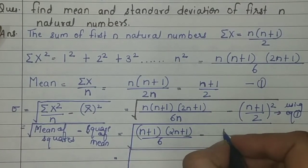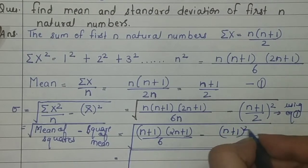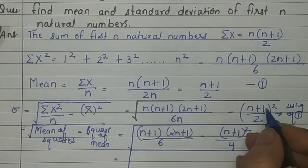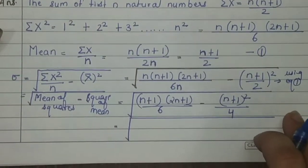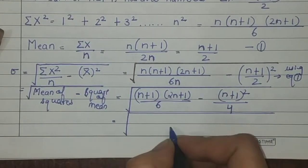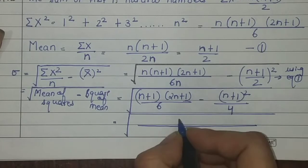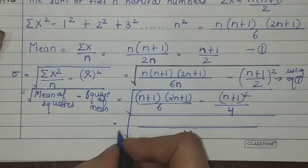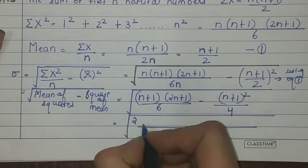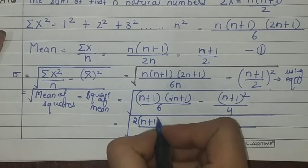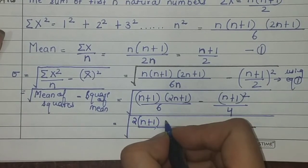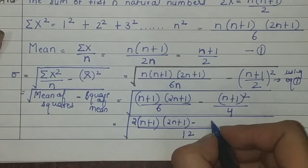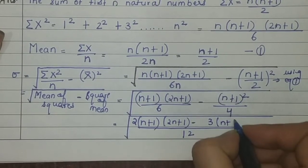So inside the square root we have: (n+1)(2n+1)/6 minus (n+1)²/4. Taking LCM of 6 and 4, which is 12, the numerator becomes: (n+1)(2n+1)·2 minus (n+1)²·3, all over 12. Expanding: 2(n+1)(2n+1) minus 3(n+1)².